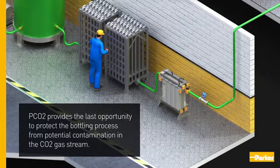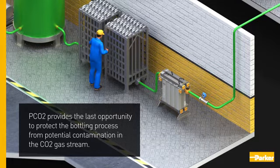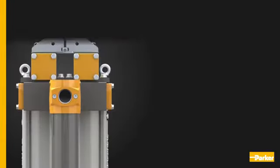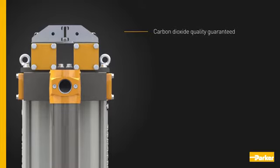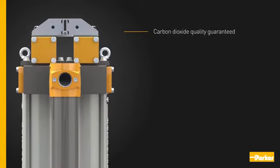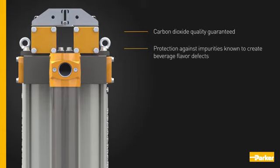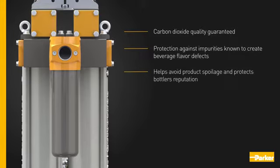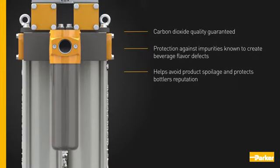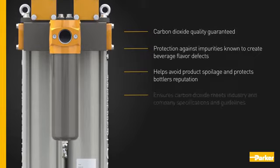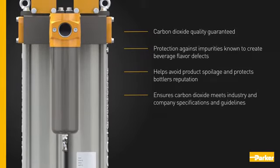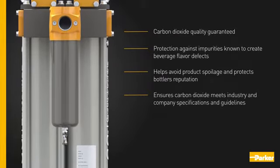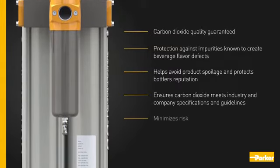pCO2 provides the last opportunity to protect the bottling process from potential contamination of the CO2 gas stream. The benefits of installing a pCO2 system include: carbon dioxide quality guaranteed; protection against impurities known to create beverage flavor defects; helps avoid product spoilage and protects the bottler's reputation; ensures carbon dioxide meets industry and company specifications and guidelines; and minimizes risk.